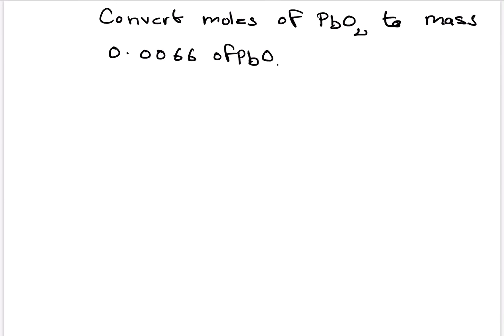So let's take it 0.0066 of PbO2 into the molar mass of lead oxide. We have done that previously to find out the molar mass. So molar mass of lead (IV) oxide will be 239.2 gram per mole. Remember to use the correct unit.